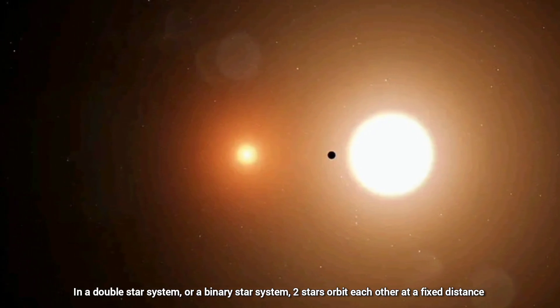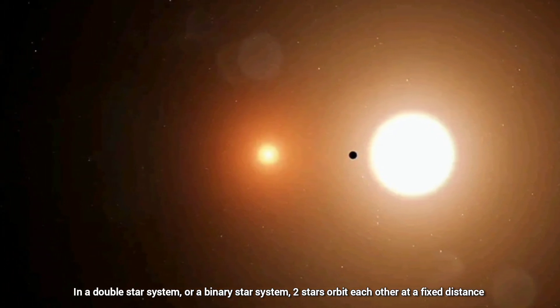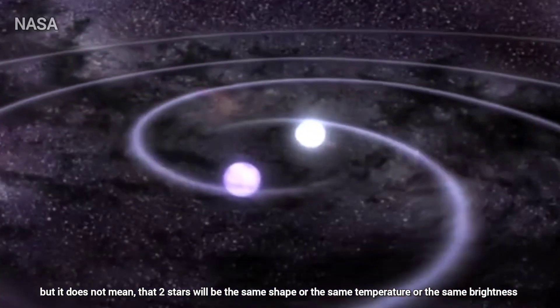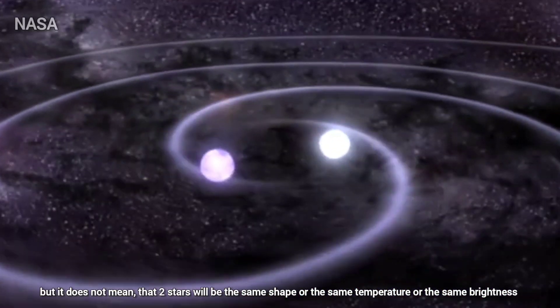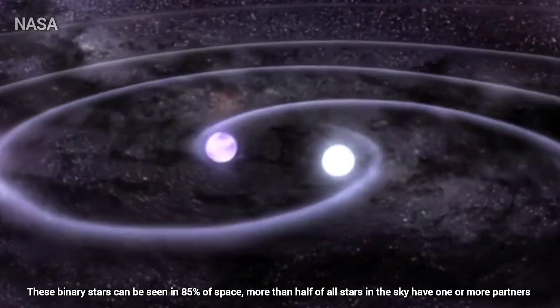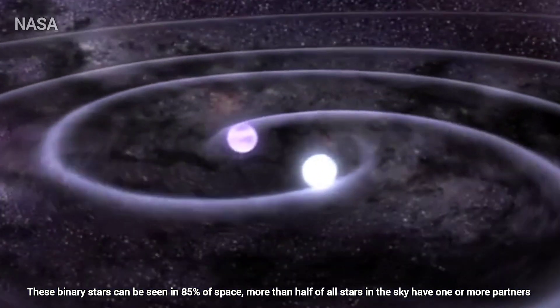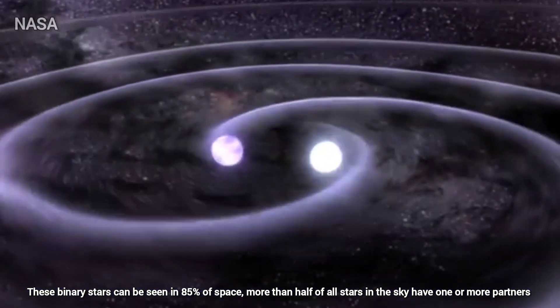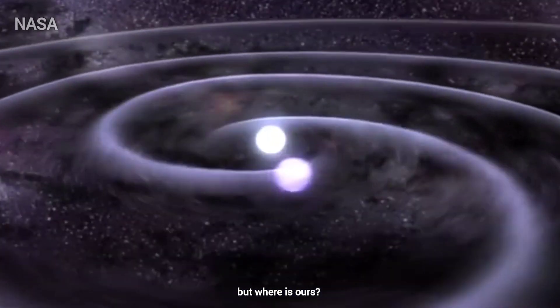In a double star system or a binary star system, two stars orbit each other at a fixed distance. But it does not mean that two stars will be the same shape or the same temperature or the same brightness. These binary stars can be seen in 85% of space. More than half of all stars in the sky have one or more partners, but what is ours?